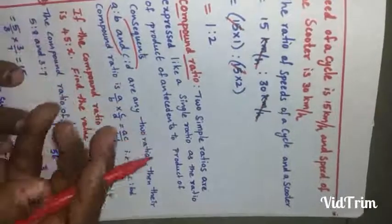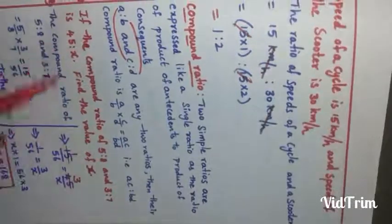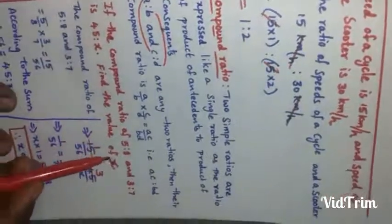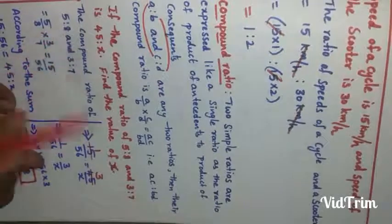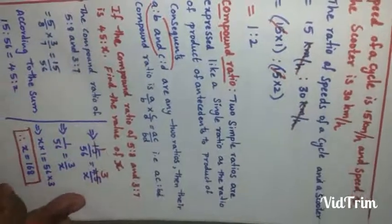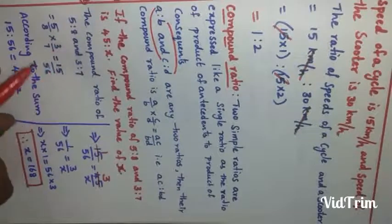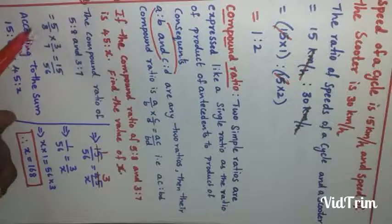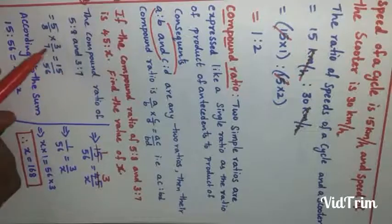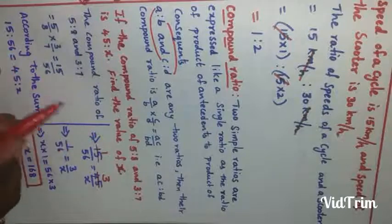Now let us see a problem. If the compound ratio of five to eight and three to seven is 45 is to x, find the value of x. The compound ratio of five to eight and three to seven: writing five to eight as five by eight and three to seven as three by seven, multiplying gives five threes as 15 and eight sevens as 56.